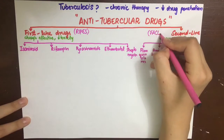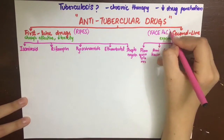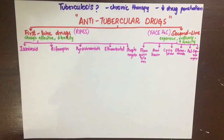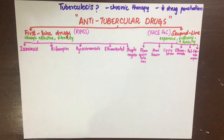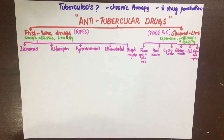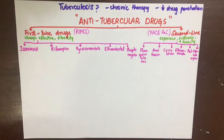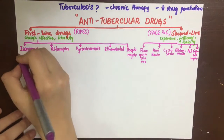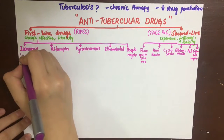To remember the names of both classes of drugs: the first-line drugs can be remembered by the mnemonic RIPES, and the second-line drugs can be remembered by FACE PACK.